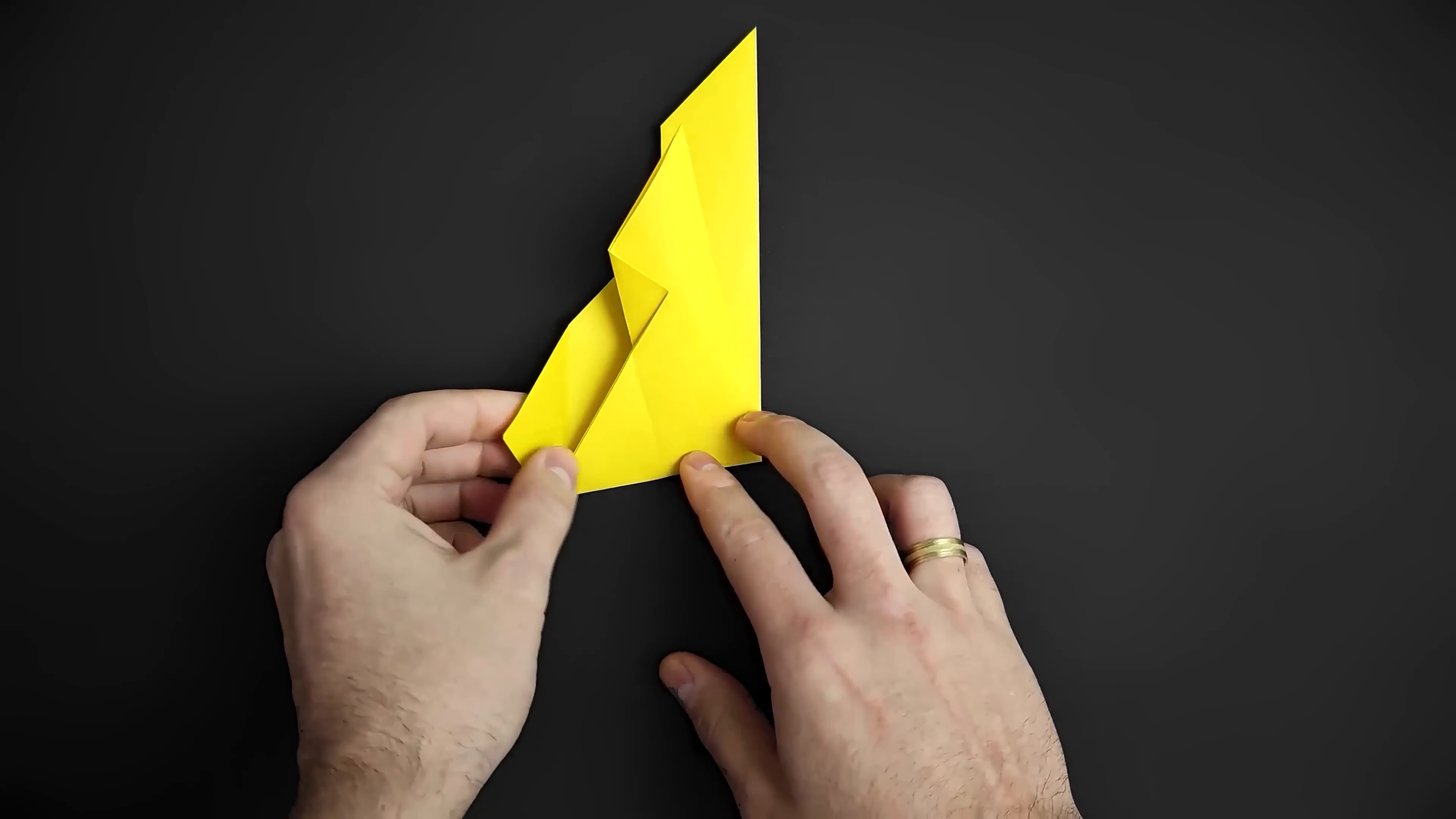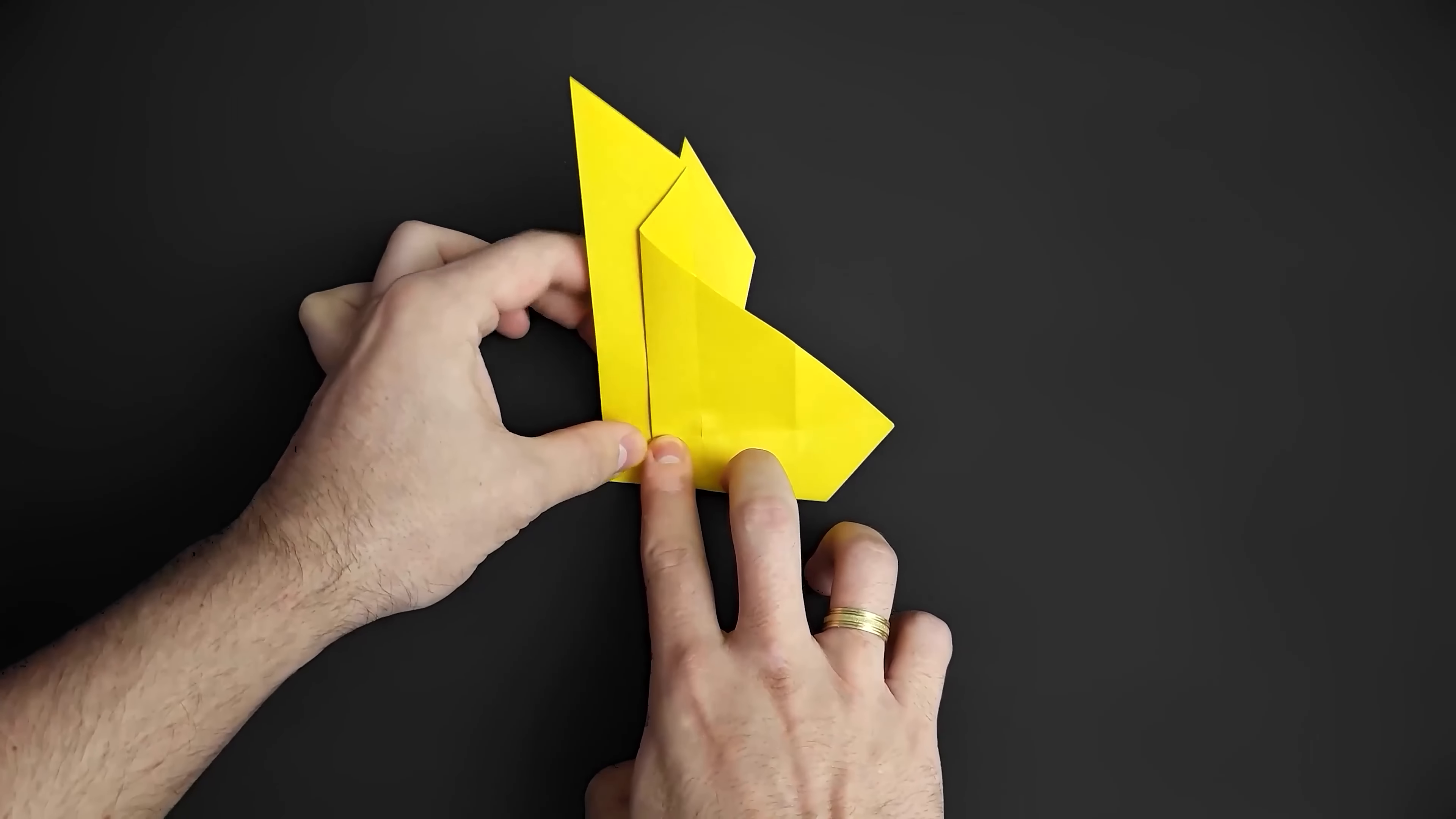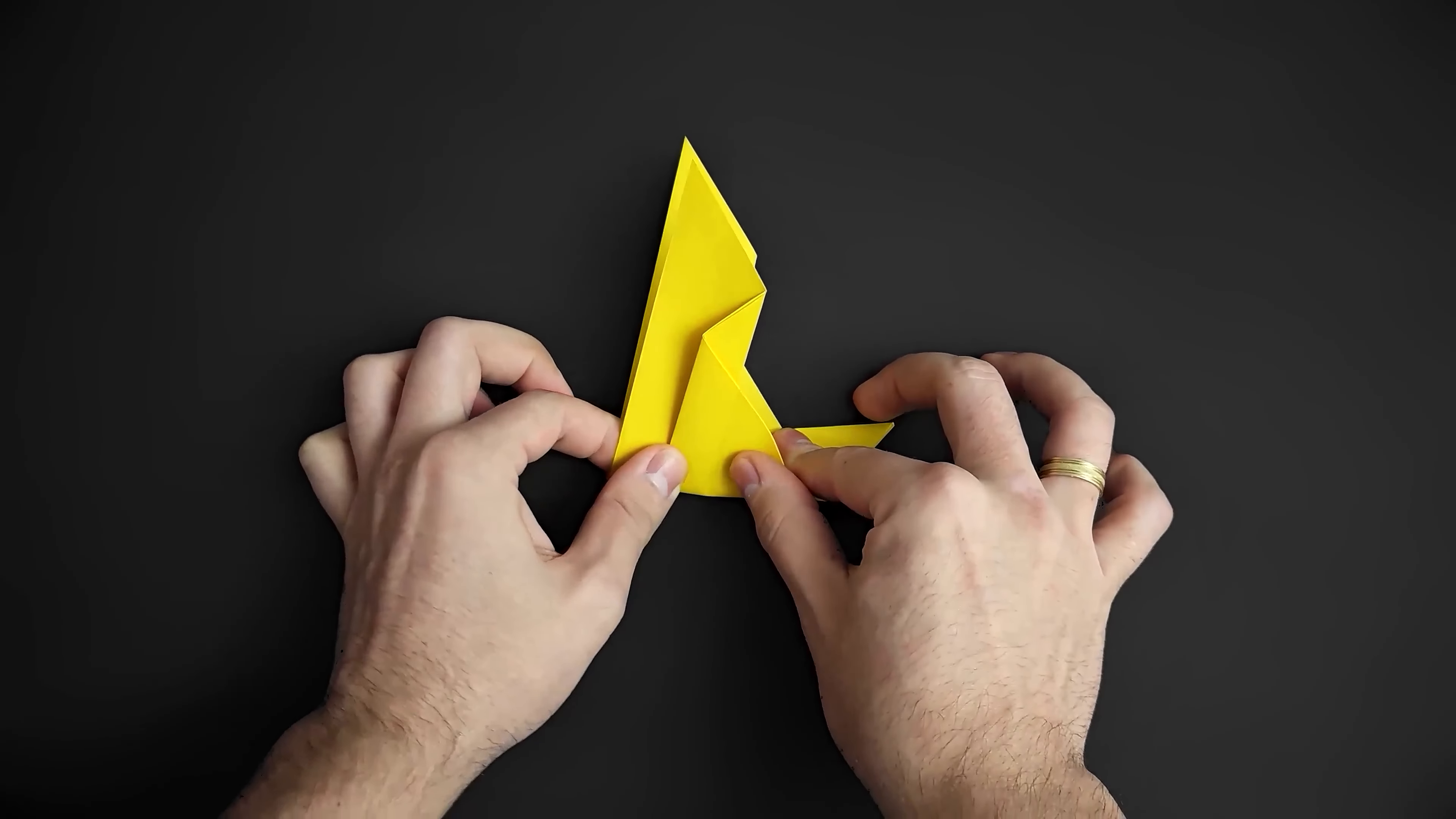Flip the paper over and fold this side down along the existing horizontal line. Then fold this larger flap up over the other one we just folded.